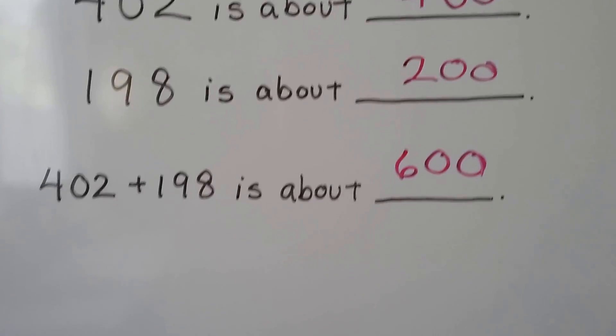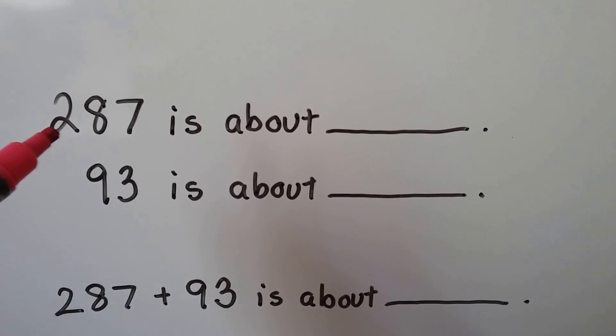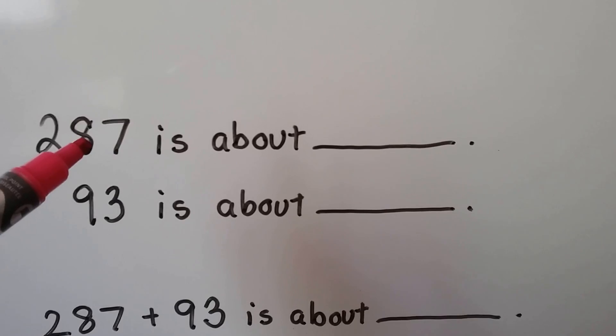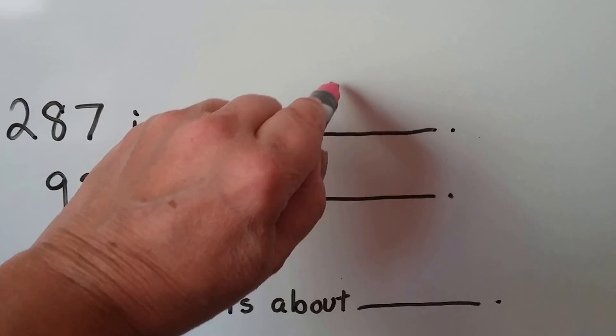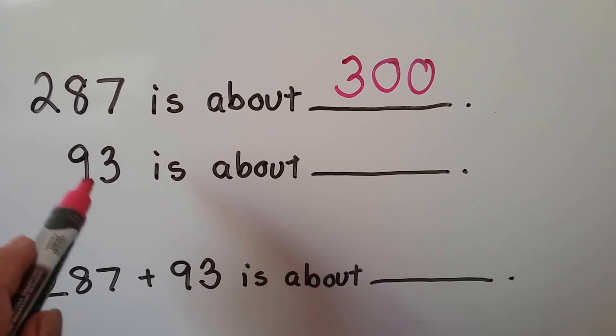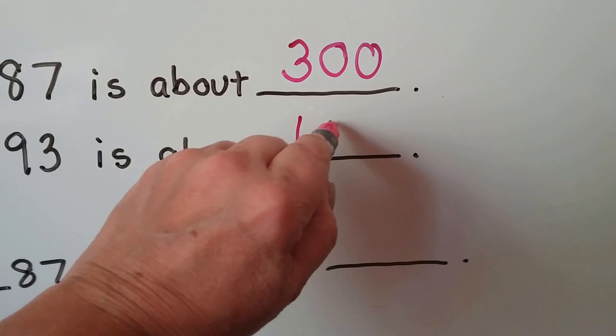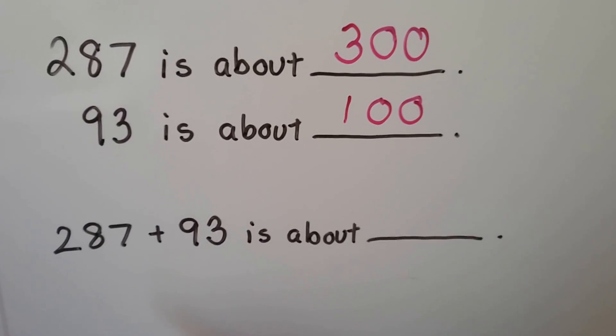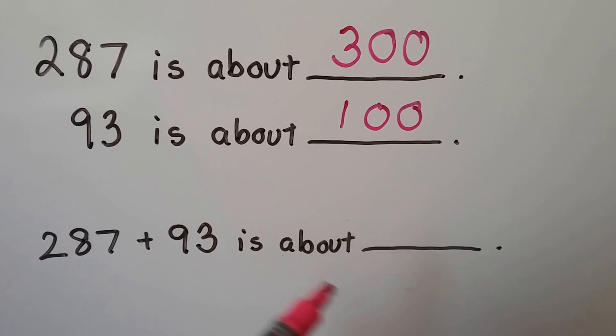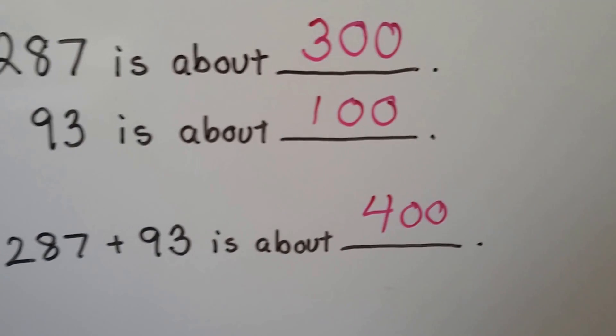Let's try this again. We have 287. Is that closer to 200 or 300? Well, 87 is pretty big, so this would be closer to 300. How about 93? Which 100 do you think that's close to? Well, if you said 100, you're right. It's pretty close to 100. So if we needed to estimate the sum, 287 plus 93 is about, if we add these together, it's about 400. It's not the exact answer, it's an estimate to the nearest hundred.